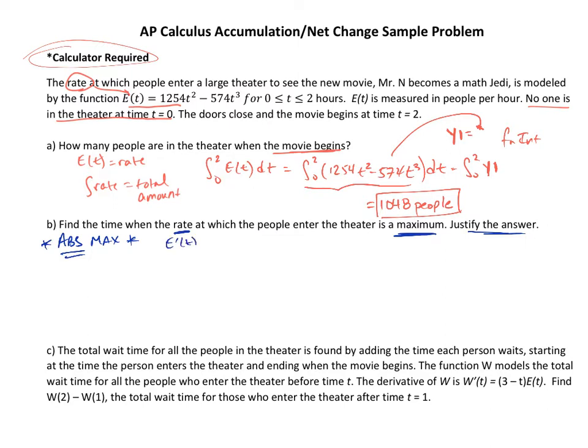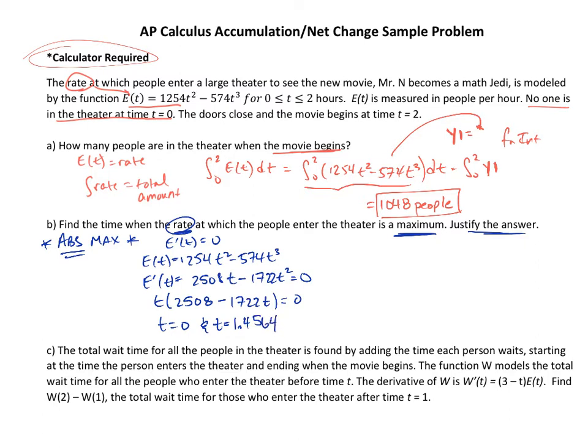We want to take the derivative E'(t), the derivative of this rate, and set that equal to zero. We have E(t) = 1254t² - 574t³. Take the derivative and you'll get 2508t - 1722t². Set that equal to zero. You could take a t out. This is 1722t = 0. So you get t = 0 and t = 2508 divided by 1722. Put that in my calculator and that comes out to be 1.4564.